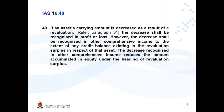Paragraph 40: If an asset's carrying amount is decreased as a result of a revaluation, the decrease shall be recognized in profit or loss. However, the decrease shall be recognized in other comprehensive income to the same extent of any credit balance existing in the revaluation surplus in respect of that asset. The decrease recognized in other comprehensive income reduces the amount accumulated in equity under the heading of revaluation surplus.